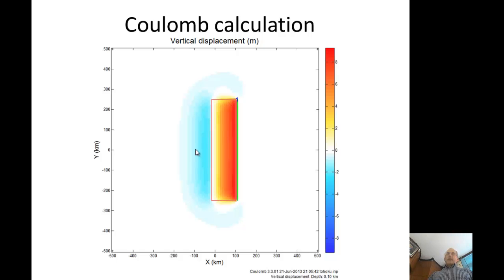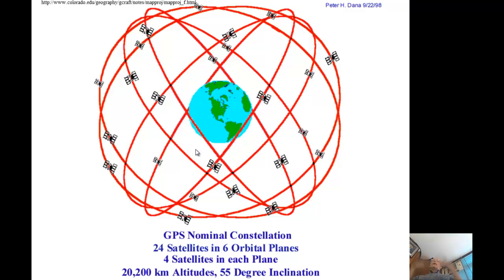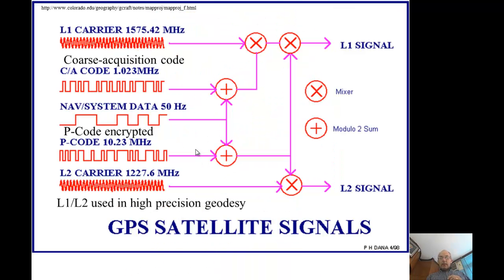Now let's look at GPS. The concept was started by the United States Department of Defense for military navigation. There are 24 GPS satellites, and while it started as defense, it's now open and commercially useful. Russia has GLONASS and Europeans have Galileo — many similar systems exist. The satellites send L1 and L2 signals used for high-precision geodesy.